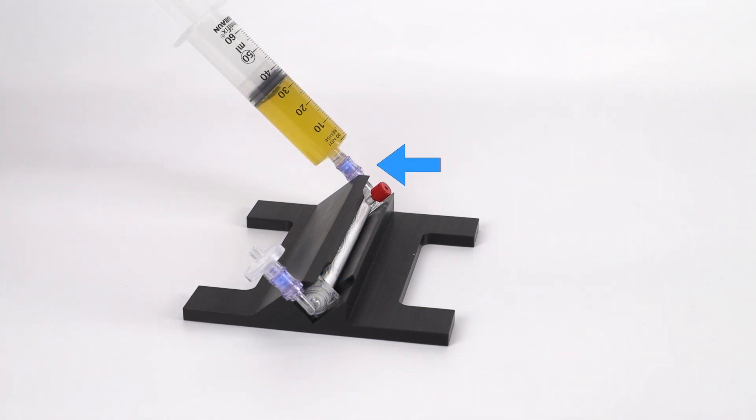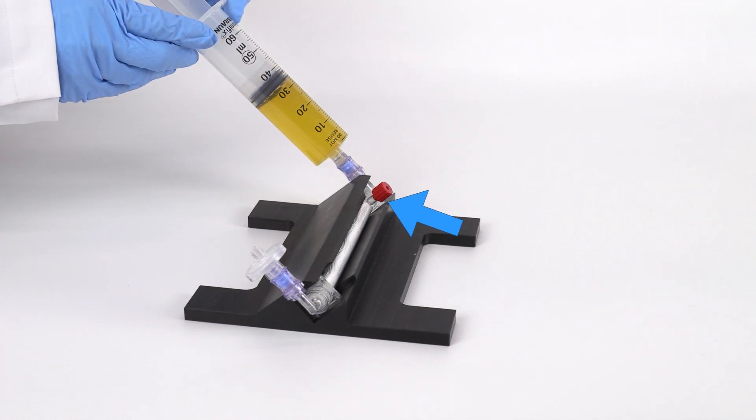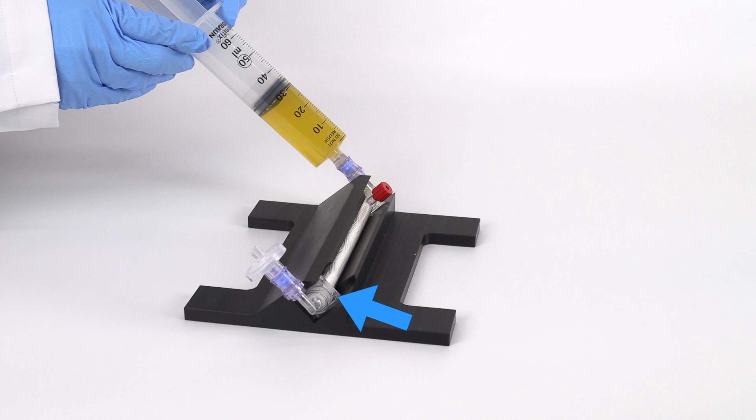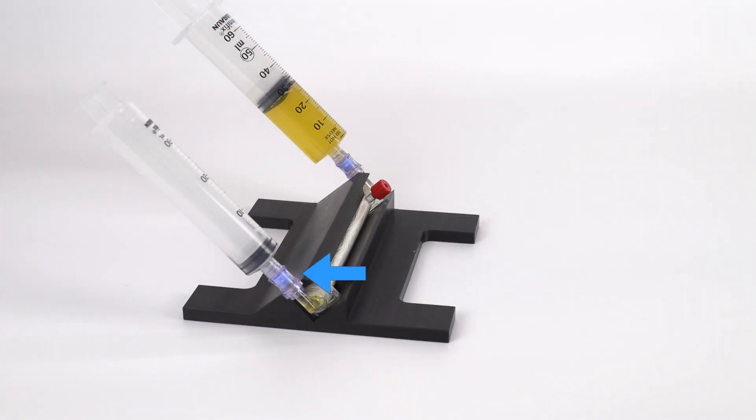Remove the red cap on the opposite end port and attach the plasma syringe. Inject plasma through the device until it reaches the filter. Remove the filter and attach an empty transfer syringe.